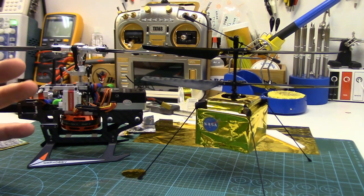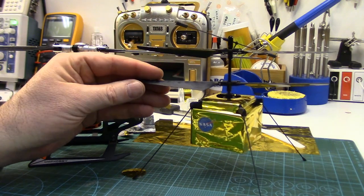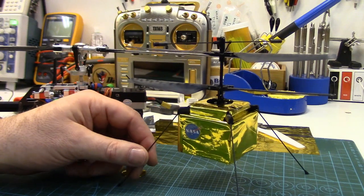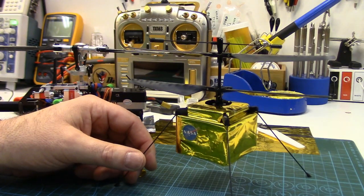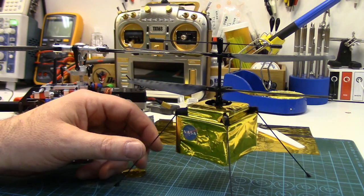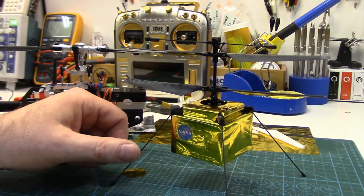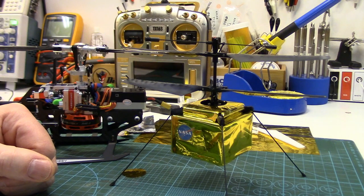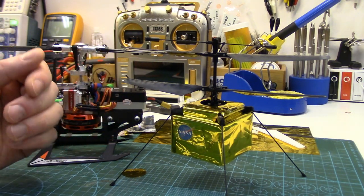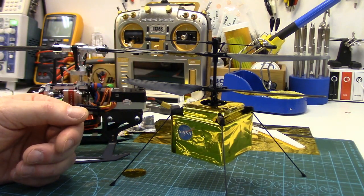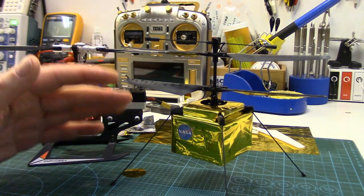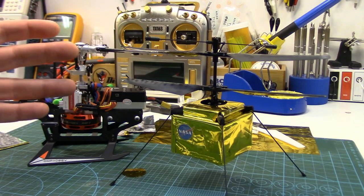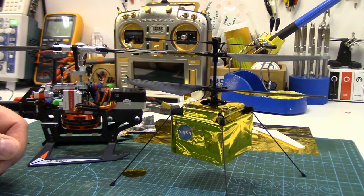Now I should point out, unlike our little fixed pitched micro coaxial RC helicopters that vary the two rotor RPMs to change the reactive torque to induce yaw movement, the full-size Ingenuity collective pitch coaxial rotor system is most likely spinning both rotors at a fixed RPM and creating reactive torque changes between both rotors for yaw control by changing the collective angle of each rotor, just like a full-size coaxial helicopter does.